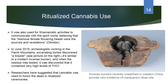There is also a lot of evidence about ritualized cannabis use in China. It was used in shamanistic activities to commune with the spirit world, with the resinous female flowering heads believed to be sources of revelation. In June 2019, archaeologists working in the Pamir Mountains excavated tombs and discovered a brazier — like a modern incense burner. The residue was tested and discovered to contain very high levels of THC. Researchers suggested cannabis was used to honor the dead in ritualized ceremonies; throwing resinous flowers onto burning coals releases fumes that bind to receptors in the brain.